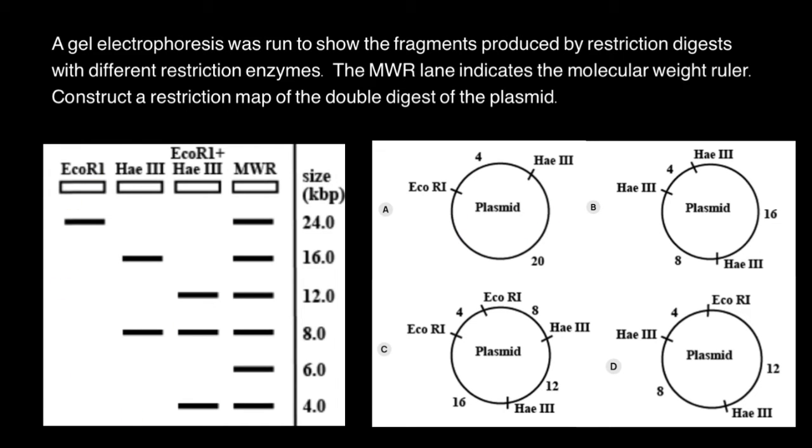This is what we see with restriction enzyme EcoRI. Because we have here a single band, that means that this enzyme cut this plasmid in a single place.